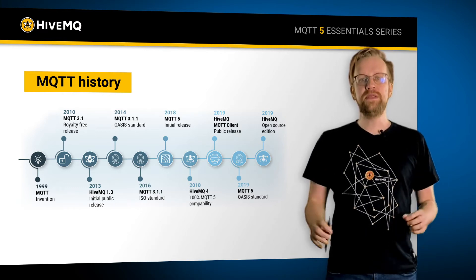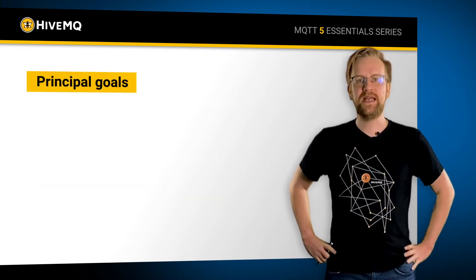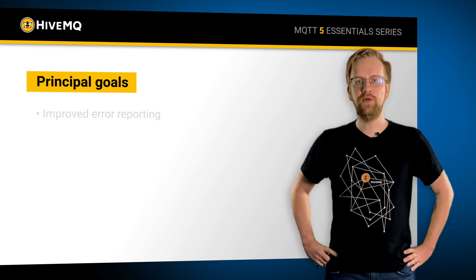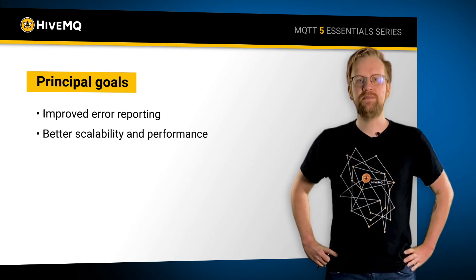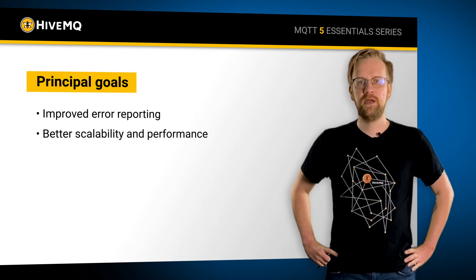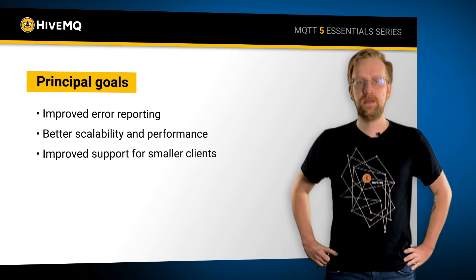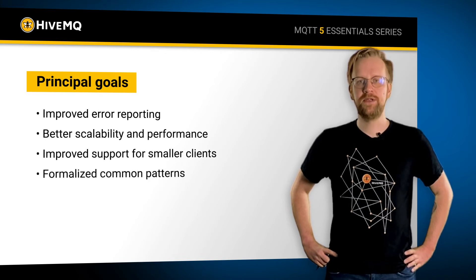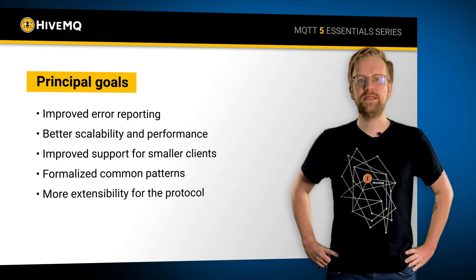The principal goals identified by the OASIS Technical Committee for MQTT5 were: improved error reporting, better scalability and performance, improved support for smaller clients, introducing commonly used patterns into the protocol itself, and making the protocol more extensible.